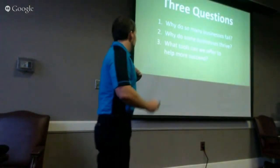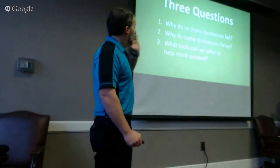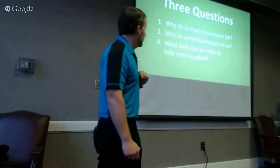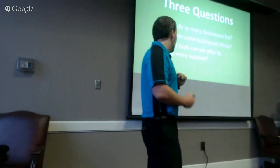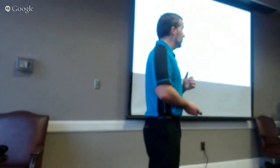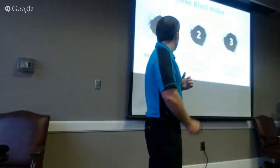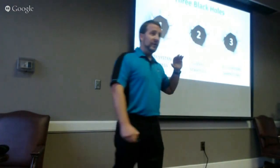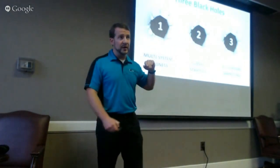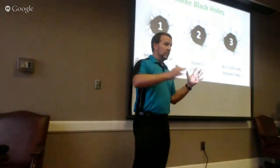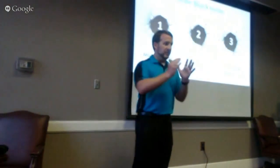We're going to run through all seven of these cycles. First, three quick questions: why do businesses fail, why do some thrive, and what can we do to succeed? There are three black holes that we've run into. At WideNet, as we've grown over the last ten years, we've used separate tools for invoicing, contacts, and email lists — even Excel sheets to try to track things.